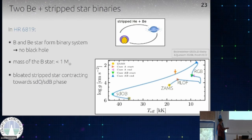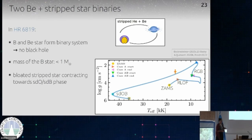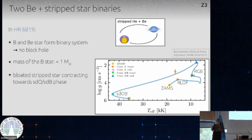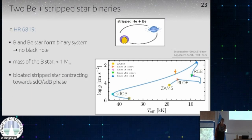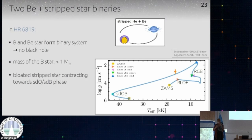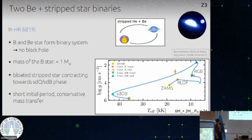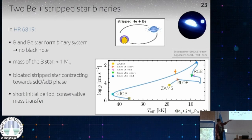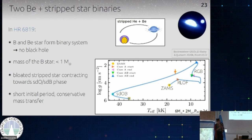Most systems were detected in the hot subdwarf phase at ~40–50,000 K. But we think HR 6019 was observed just after the mass transfer ended — in a phase where the star has not contracted yet, so it's not yet as hot as typical subdwarfs and therefore looks like a normal B-type star but has less than one solar mass. Using spectroscopy and interferometry for HR 6019, we can show that both the mass and the temperatures, surface gravities, and everything match consistently. We can also learn something about the mass transfer — this system requires a really short initial period and mostly conservative mass transfer.